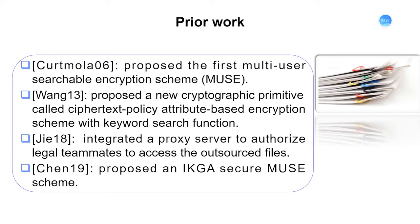There are existing related works on multi-user searchable encryption (MUSE) and IKGA security. The first MUSE scheme was proposed by Kurt Müller, who utilized broadcast encryption to enable data senders to selectively share files according to receiver's privilege. Wang et al. proposed introducing attribute-based encryption to support encrypted search for multiple users, extended by many scholars later. Since most MUSE schemes are designed under the public key framework, the cloud server can conduct the aforementioned IKGA. Chen et al. proposed an IKGA-secure MUSE scheme; however, empirical results show it comes with expensive computation and communication cost. To this end, in this paper, we concentrate on designing an IKGA-secure MUSE scheme in an efficient manner.